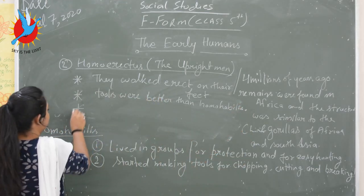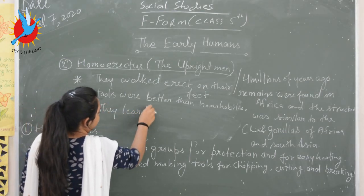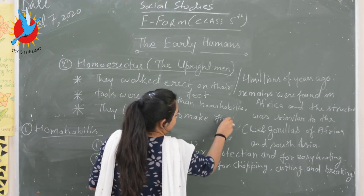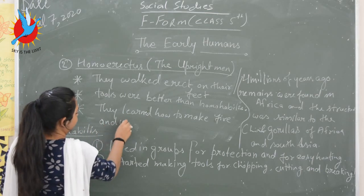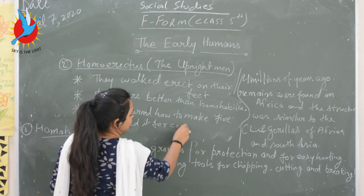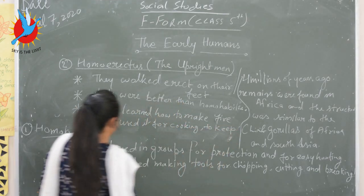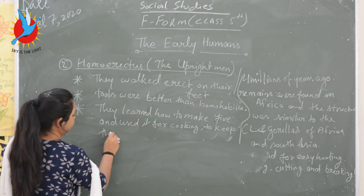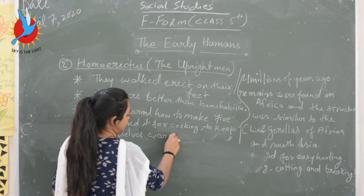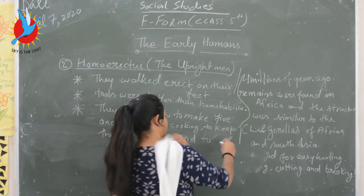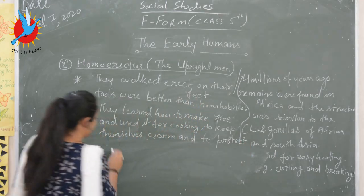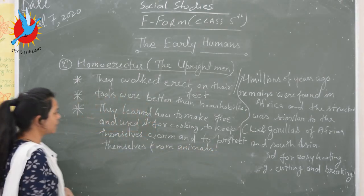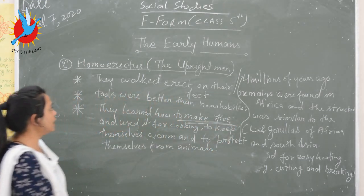The third and very important point about Homo Erectus is that they learned how to make fire. They used fire for cooking, to keep themselves warm, and to protect themselves from animals. This is a very important invention done by Homo Erectus.